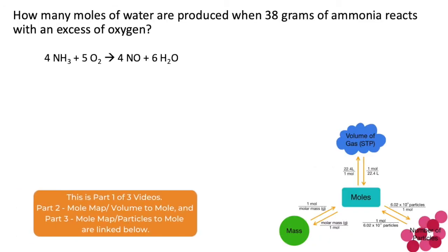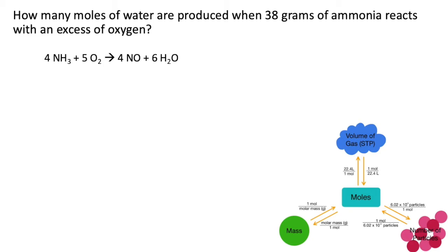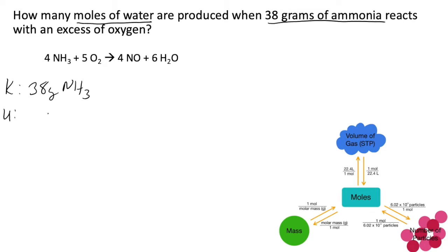In this problem we're asked to find how many moles of water are produced when 38 grams of ammonia reacts with an excess of oxygen. The first thing we're going to do is identify our known and our unknown. Our known is 38 grams of ammonia, and our unknown — what we're being asked to find — is moles of water.